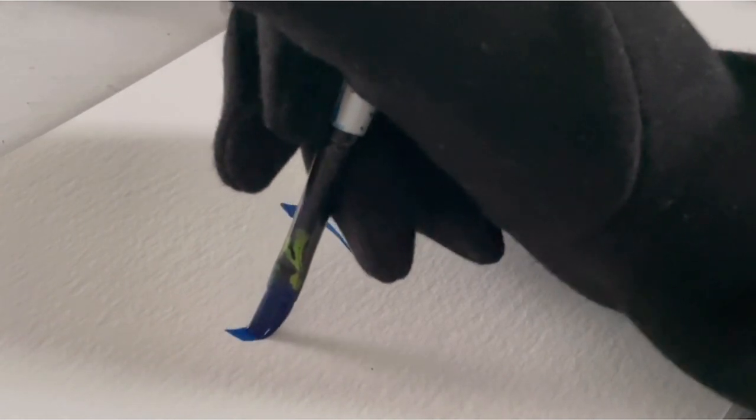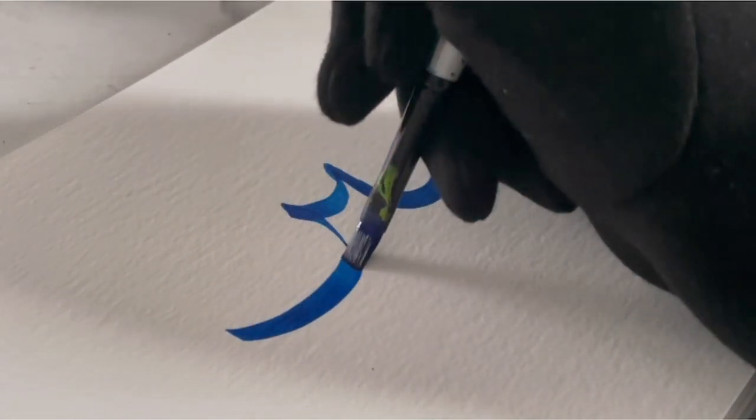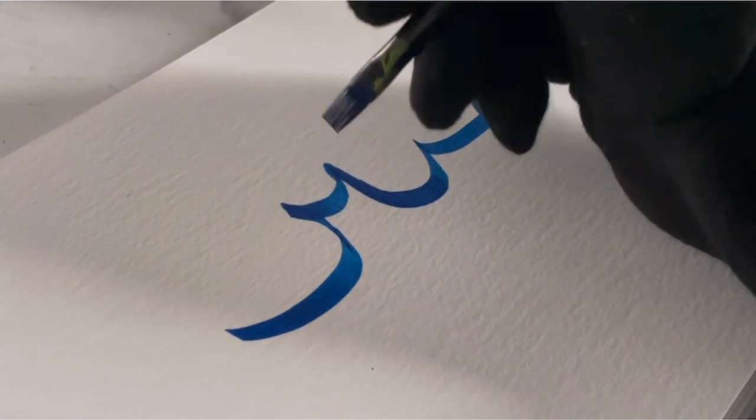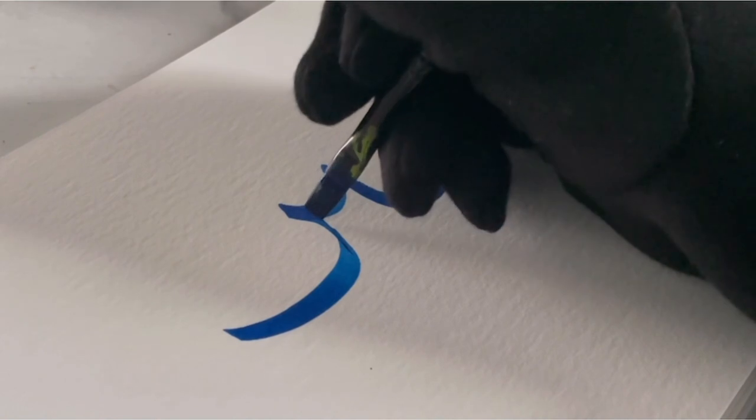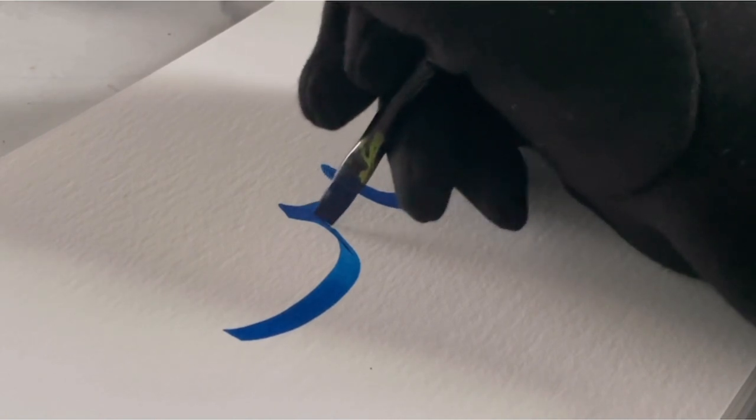Now we've got all the letters on the page, it's time to add the harakat which is just short vowel marks.